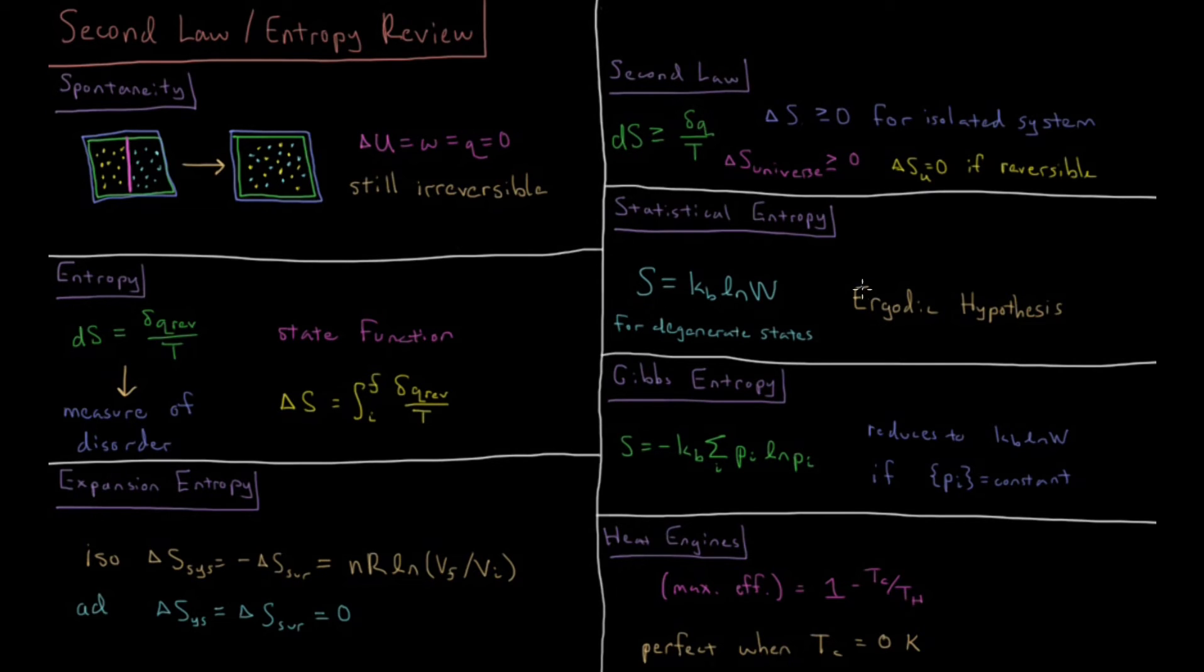This is what is called the ergodic hypothesis which is the fundamental assumption of statistical mechanics which says that if any microstate has the same energy then their probabilities of the system being in that microstate are equal, which gives us the Boltzmann formula for entropy.